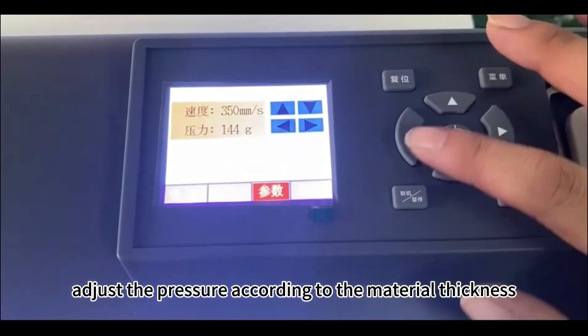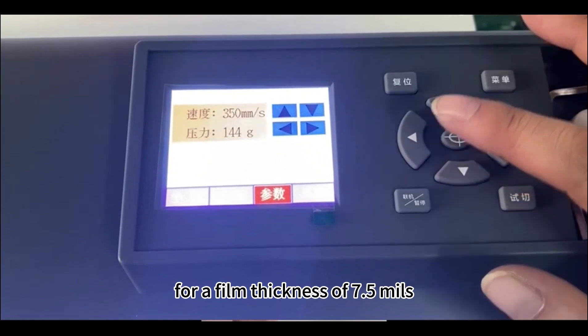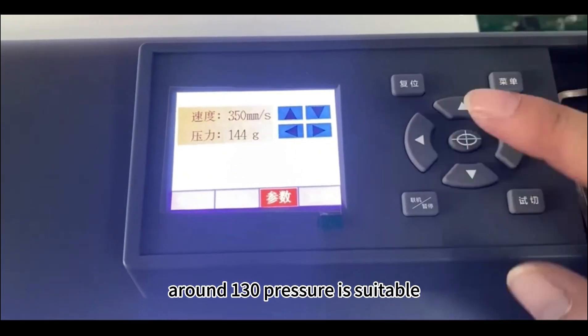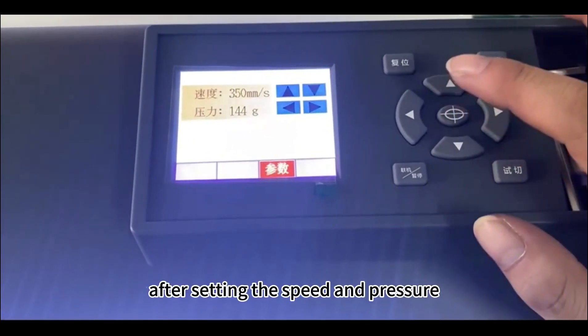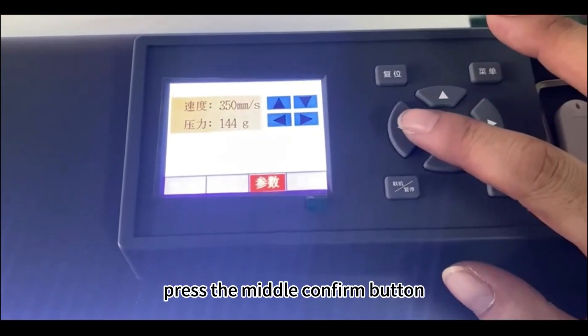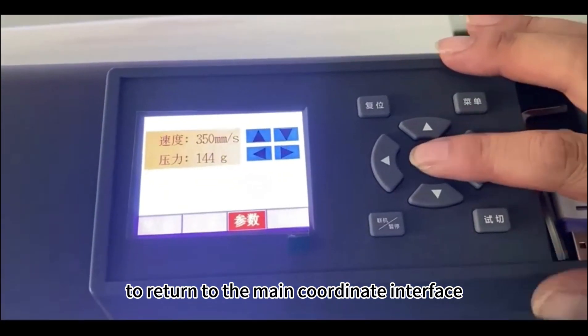Adjust the pressure according to the material thickness. For a film thickness of 7.5 mm, around 130 pressure is suitable. For each unit increase in thickness, add 10 to the pressure. After setting the speed and pressure, press the middle confirm button to return to the main coordinate interface.